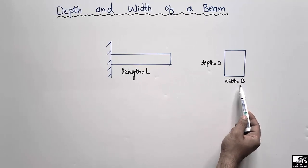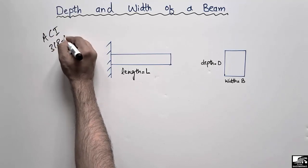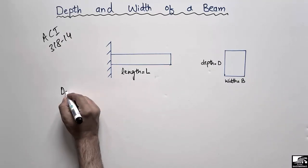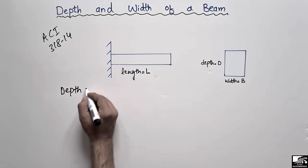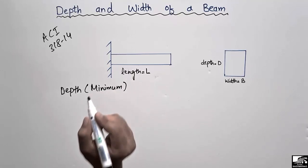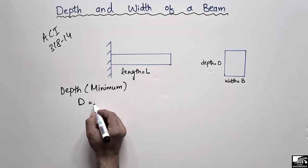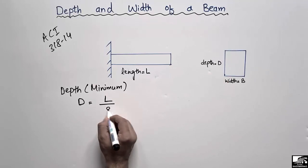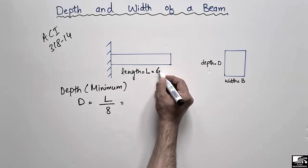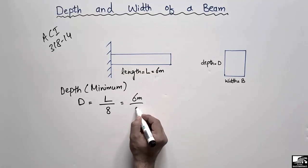According to the ACI — the American Concrete Institute — 318-14 code, the formula to find out the minimum depth of the beam for a cantilever type is: d is equal to the length of the beam divided by 8. So here, let's consider the length is 6 meters as an example. If we divide 6 meters by 8,